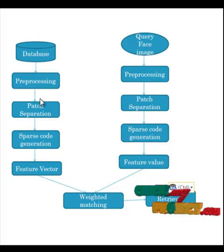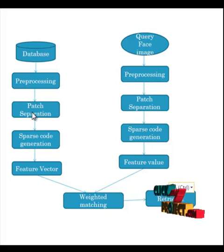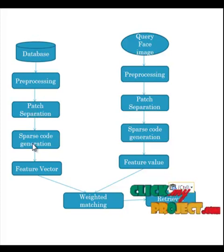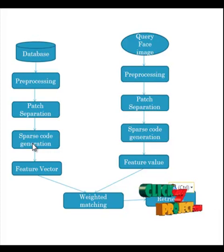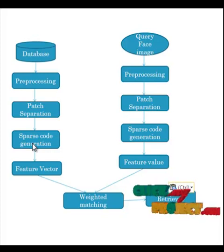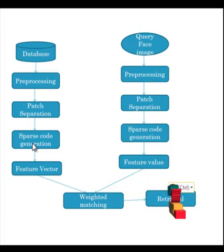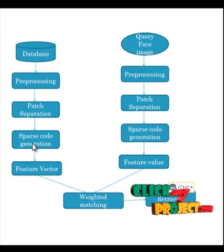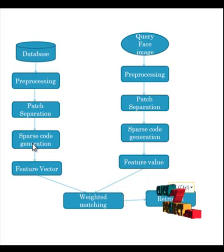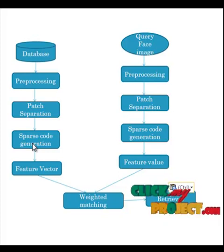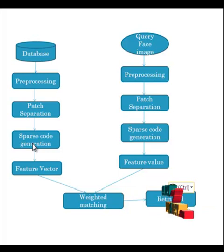After that, it will go to the batch separation, where we separate the images into batches. After that, it will go to the sparse code generation. Each item is encoded by the strong activation of a relatively small set of neurons; for each item to be encoded, this is a different subset. Given a potentially large set of input patterns, the sparse coding algorithm attempts to automatically find a small number of representative patterns from the images.